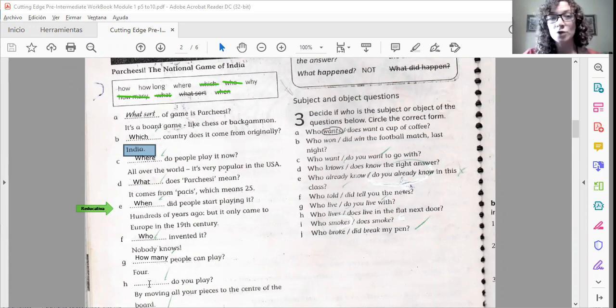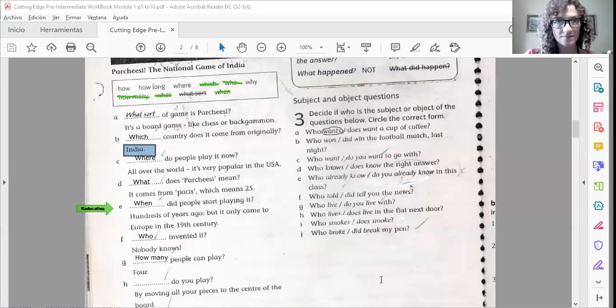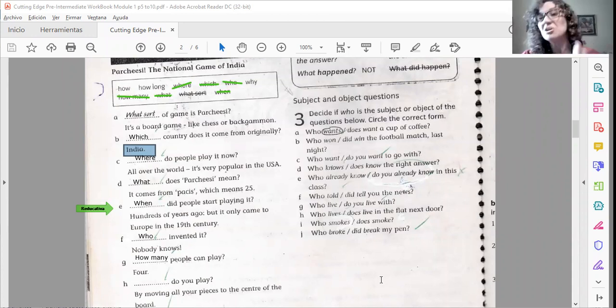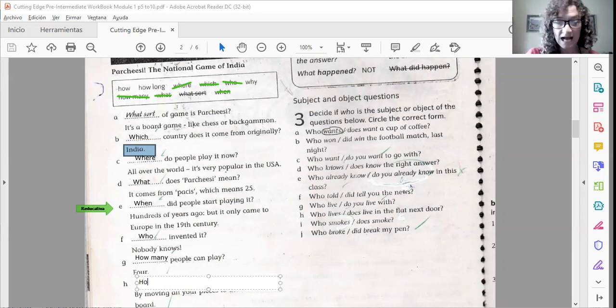Letter H. How do you play? The missing ones are how long, how, and why. So here, how do you play, how long do you play, why do you play, they are all grammatically correct. But the answer is by moving all your pieces to the center of the board. So is this the answer to how do you play, how long do you play, cuánto tiempo jugás, or why do you play, por qué jugás? This is the answer to cómo jugás, how do you play?